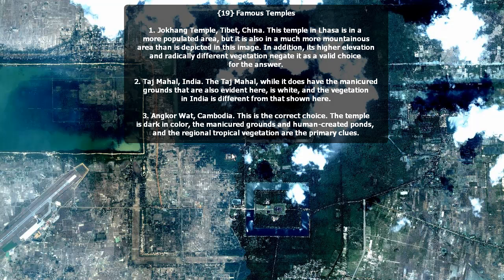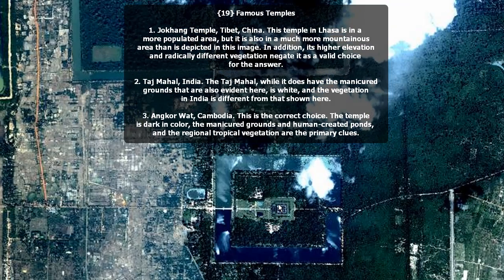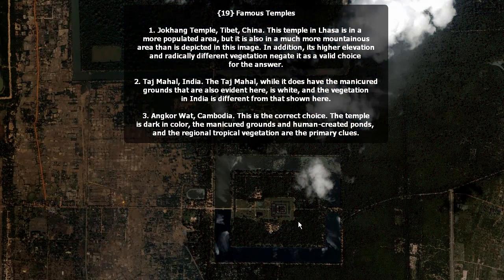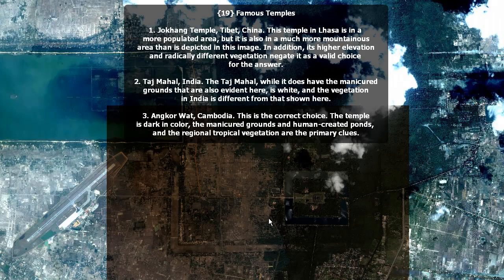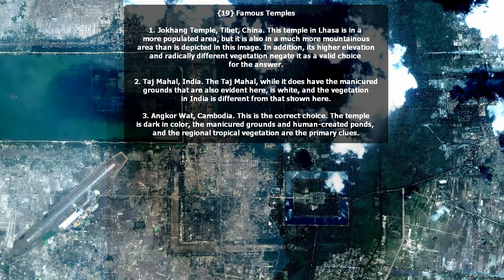Famous temples — it's actually Angkor Wat, Cambodia. The temple is dark in color, the manicured grounds and human-created ponds, and the regional tropical vegetation are the primary clues. Also this large city close by. Taj Mahal, while it does have the manicured grounds that are also evident here, is white, and the vegetation of India is different from that shown here. Jokhang Temple in Tibet, Lhasa is a more populated area, but it is also much more mountainous than is depicted here. In addition, its higher elevation and radically different vegetation negate it as a valid choice.